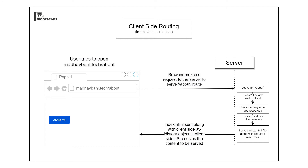The server checks for any other dev resources — maybe another HTML page, a PNG or JPEG image — anything with the same name. It doesn't find any dev resource either. So if it does not find any route definition, it simply serves the index.html file once again along with the required resources. The client-side JavaScript then has a sort of magical object which actually resolves the route. As you can guess, the routes are resolved on the client side — in React Router we have a history object at the client-side JavaScript which resolves all these routes and builds the appropriate content for each route.